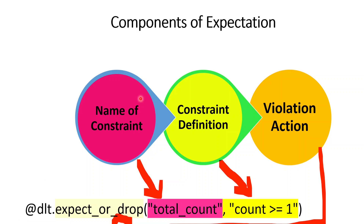In order to define an expectation, we first need to understand its structure and components. An expectation has three major components. Let me explain using this simple syntax. To define an expectation, first we start with the keyword @dlt — that is the Python decorator for Delta Live Table, which is the constant keyword. Then after that we have three components: expect_or_drop, which is one component; total_count, which is the second component; and count >= 1, which is the third component.